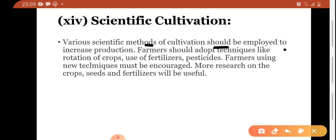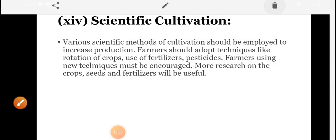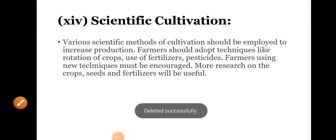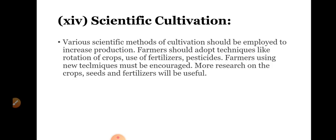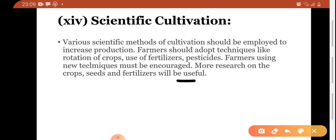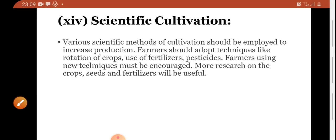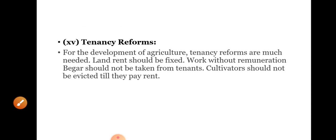Next is scientific cultivation. Various scientific methods of cultivation should be employed to increase production. If we use scientific methods, production will obviously improve. Farmers should adopt techniques like rotation of crops, use of fertilizers, pesticides, etc. Farmers using new techniques should be encouraged. More research on crops, seeds, and fertilizers should be conducted and made useful.